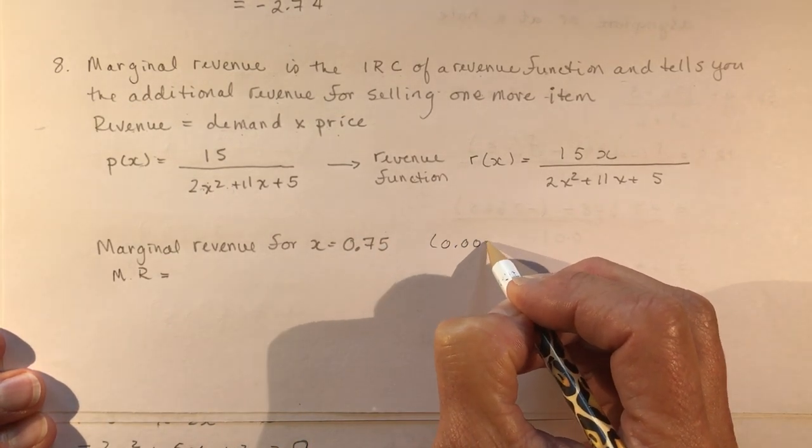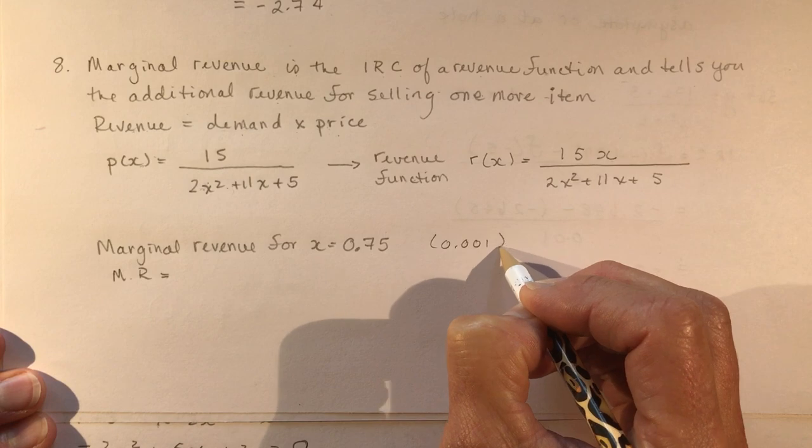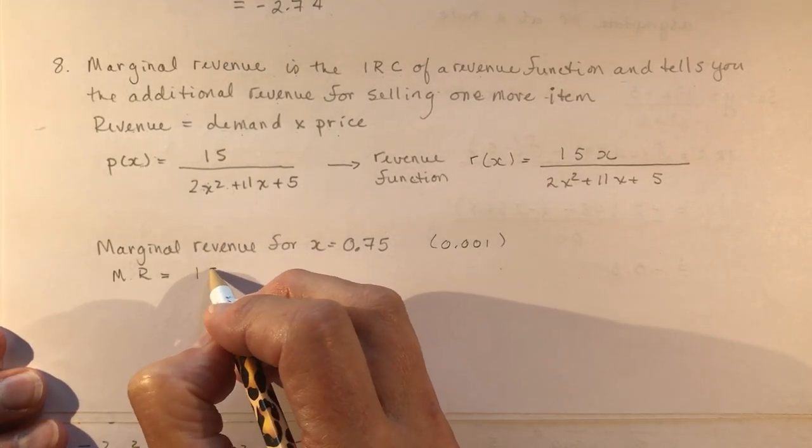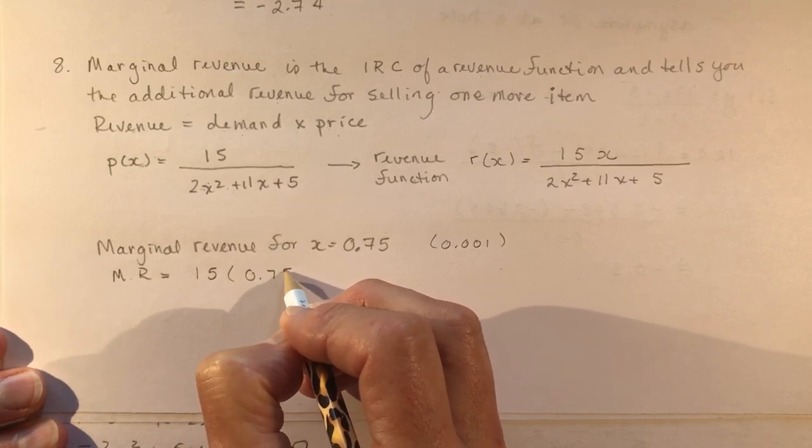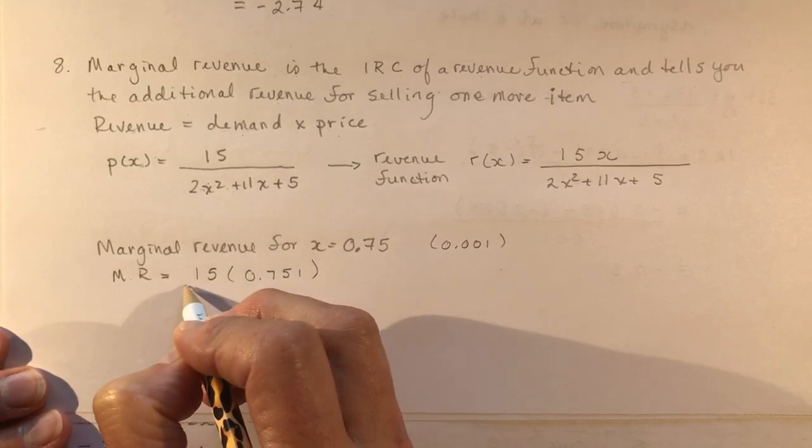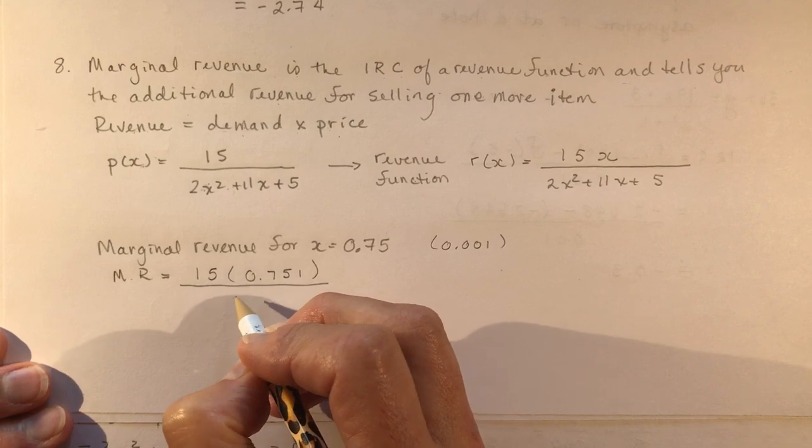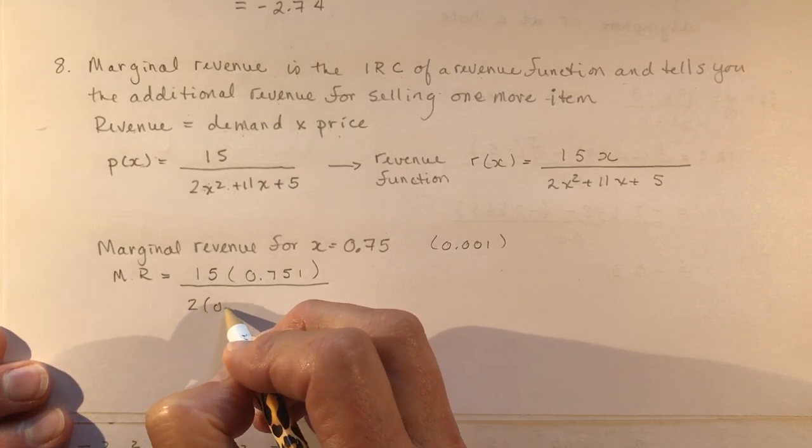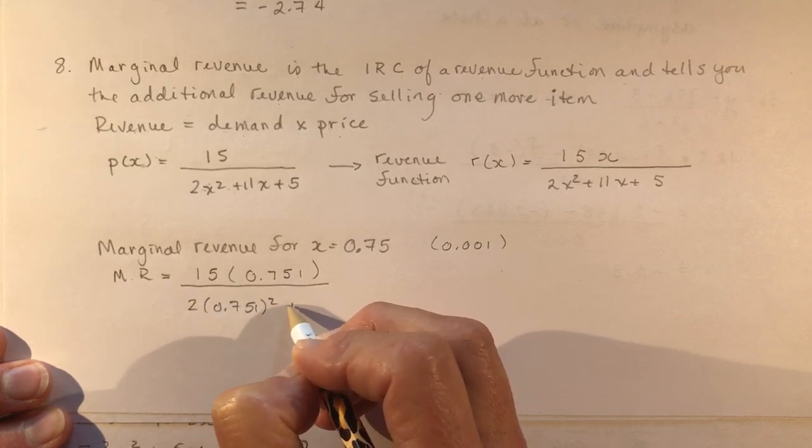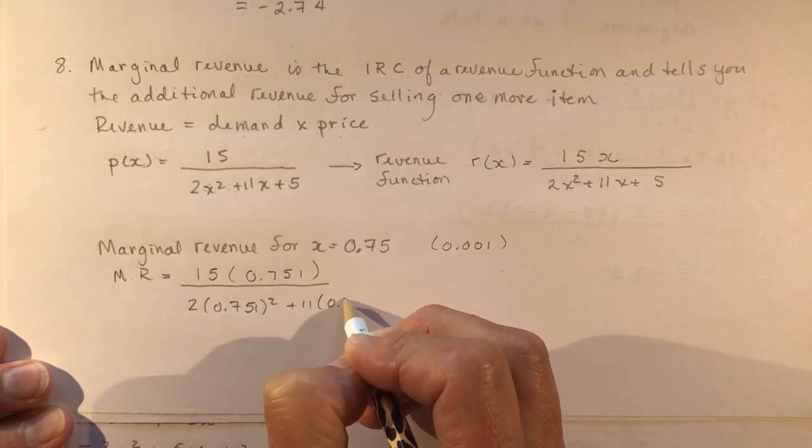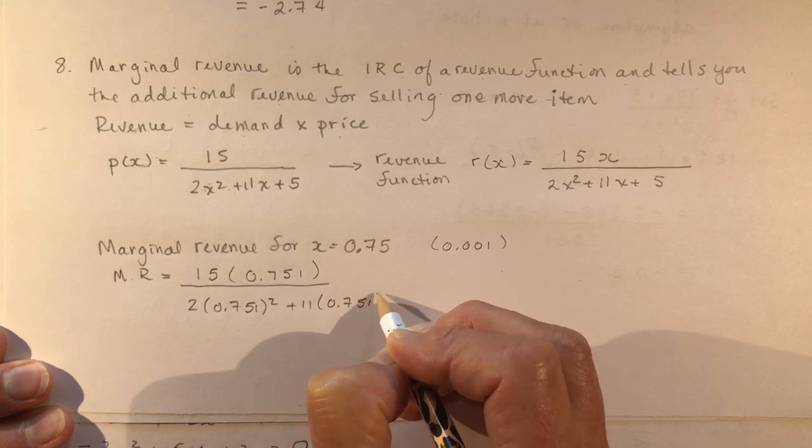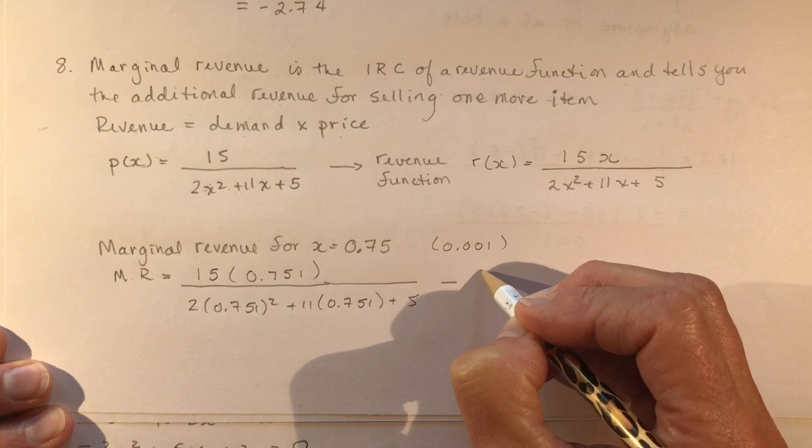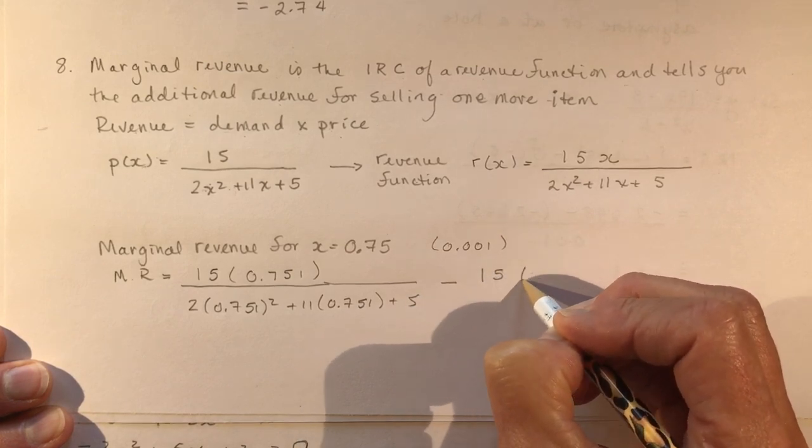So I'm going to do 15 times 0.751 divided by, and I have to write all this out, right? 2 times 0.751 squared, plus 11 times 0.751 plus 5.